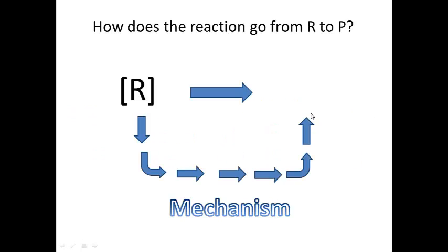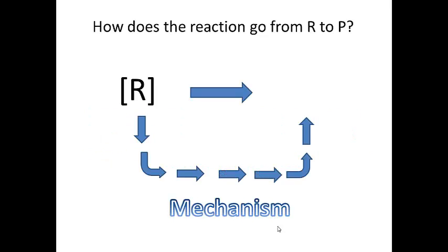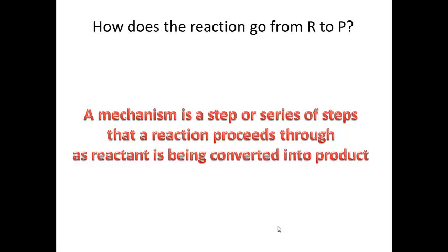The reaction has to go through a mechanism to get from reactants to product. As R is decreasing, P is forming. A mechanism is a step or a series of steps that a reaction proceeds through as reactant is being converted into product. I start with R, R goes through the mechanism of reaction, and then eventually I arrive at P on the other side of my arrow. I always go from reactants on the left side of the arrow to products on the right side of the arrow.